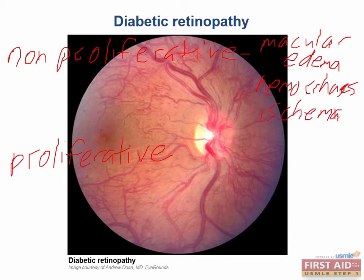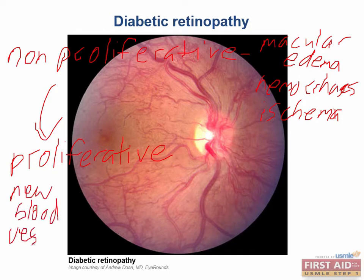With enough time this can progress to the more proliferative phase, which is where new blood vessels begin to grow. These new vessels are fragile and are very susceptible to bursting, further damaging the retina. Diabetic retinopathy can progress without any obvious symptoms of vision loss, thus a regular eye exam is very important in patients with diabetes.